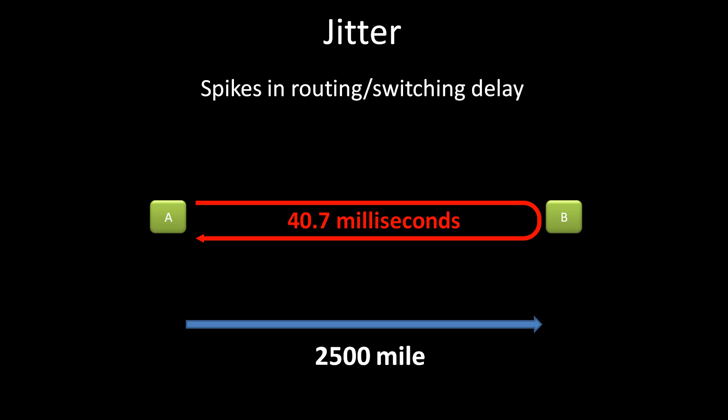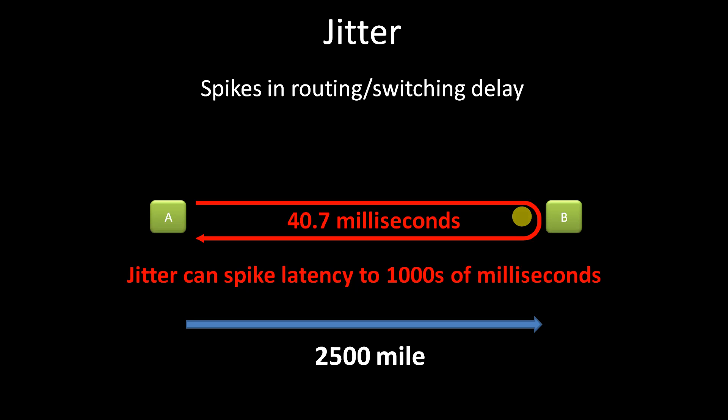Jitter is a temporary spike in routing and switching delay in the network. Think of it as brutally long layovers when airports are heavily congested — only in this case, we're talking about congested routers and switches. The delay might only last a fraction of a second, or even several seconds, but it's long enough to cut your application off for the duration of the jitter spike. Just imagine trying to talk to someone on the phone and having every other word cut out.